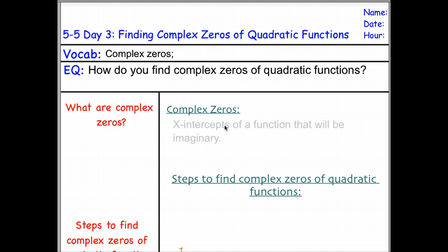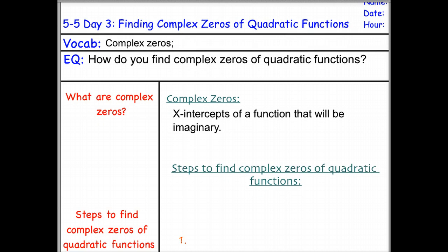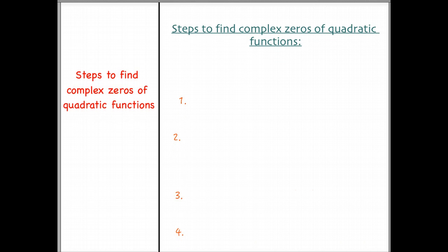Complex zeros are x-intercepts of a function that will be imaginary. The x-intercepts would be something like the square root of negative 3. In order to find the complex zeros of a quadratic function,